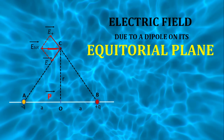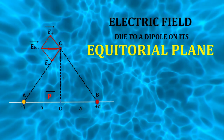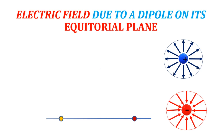In this video we are going to see electric field due to a dipole on its equatorial plane. When you see the figure you may think that it is very difficult to draw, but I can teach you in simple methods how to draw this figure. We know that any charge, positive or negative, creates electric field lines. The positive charge produces electric field lines protruding outwards and the negative charge produces a field which comes towards the charge.